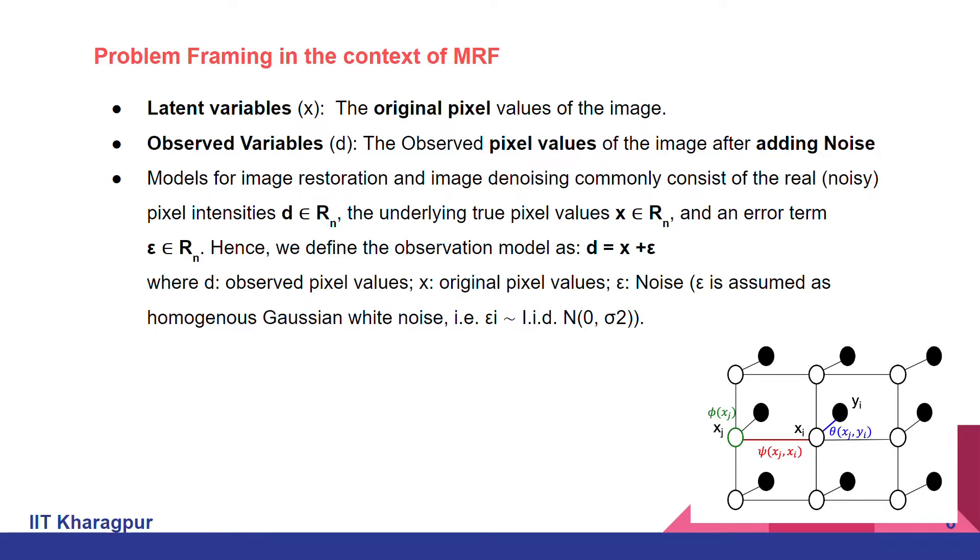Next, coming to the problem framing in the context of MRF, we took the original pixel values of the image as latent variables and the current observed pixels of the image after the noise is added as observed variables.